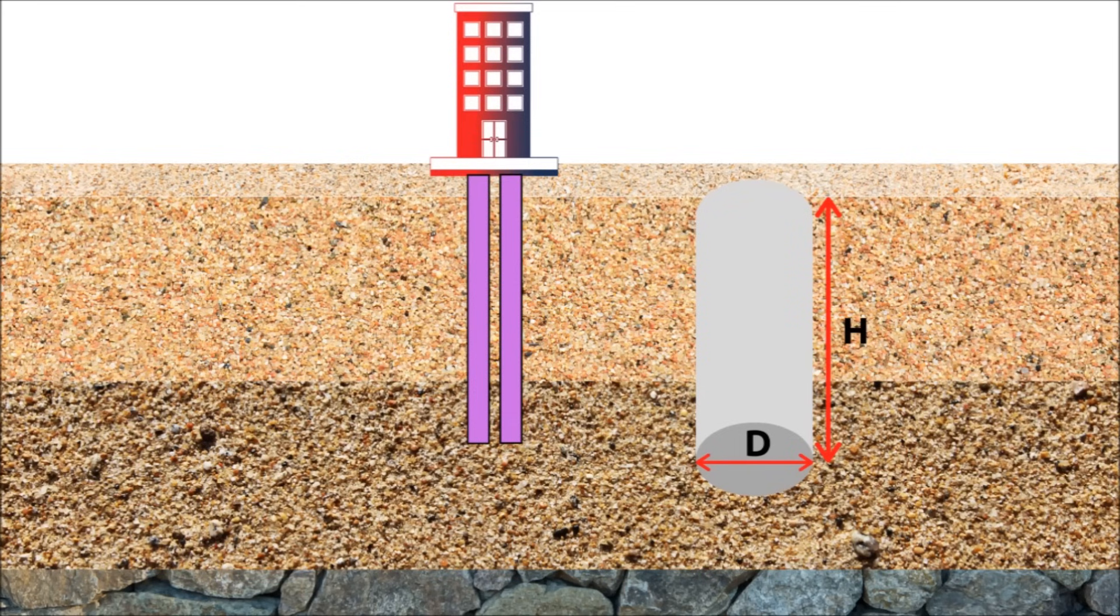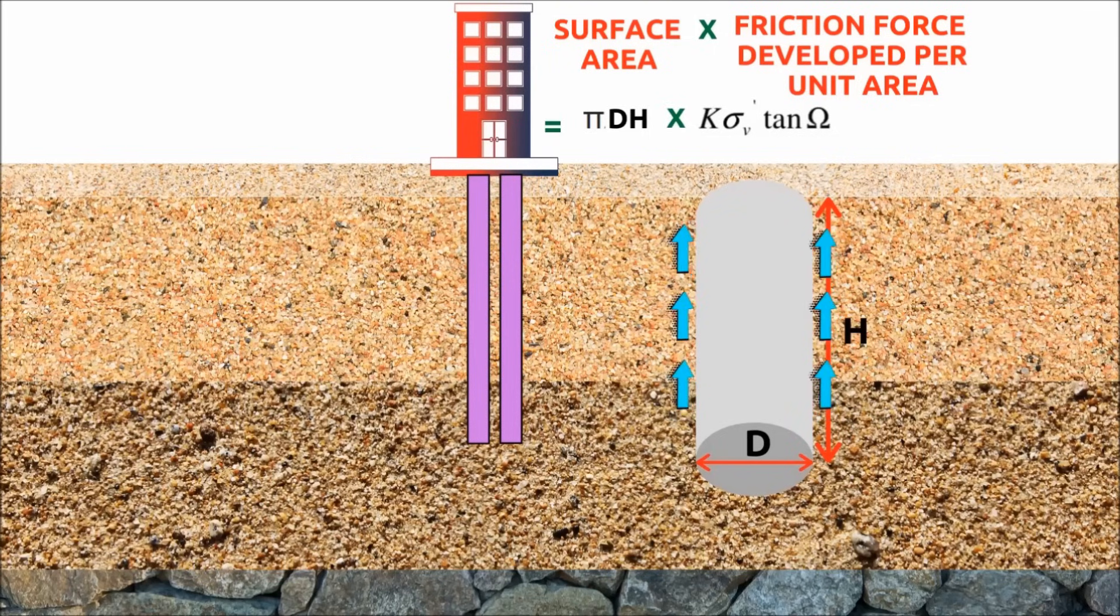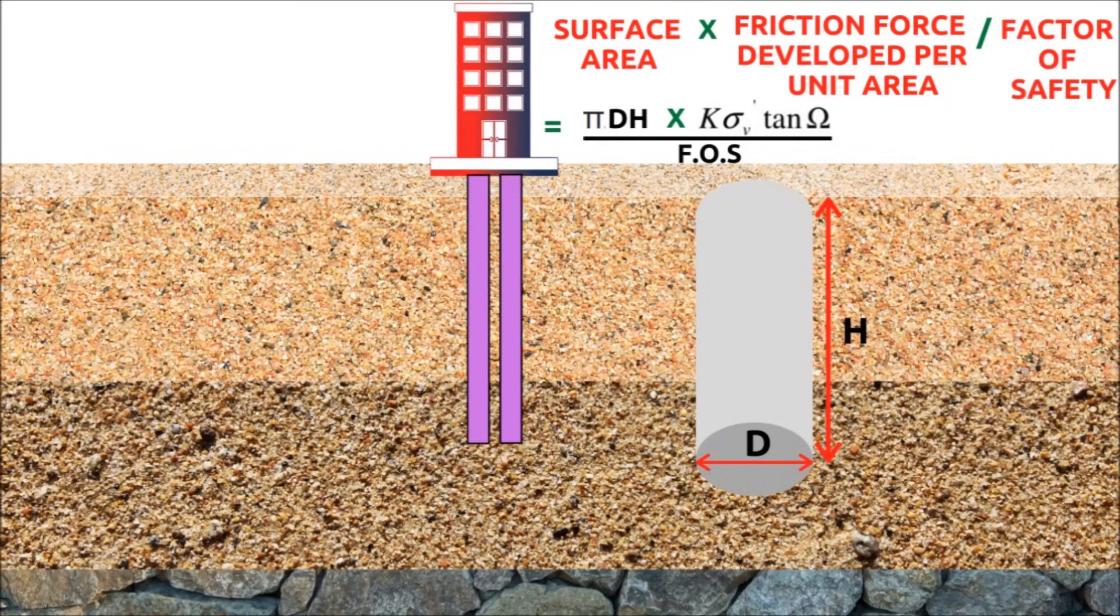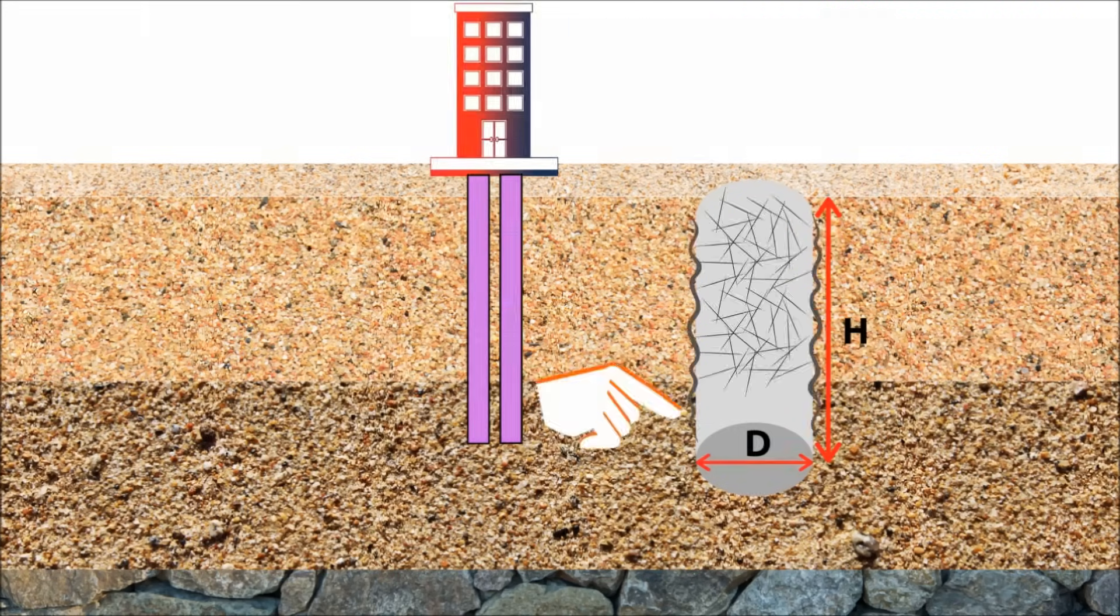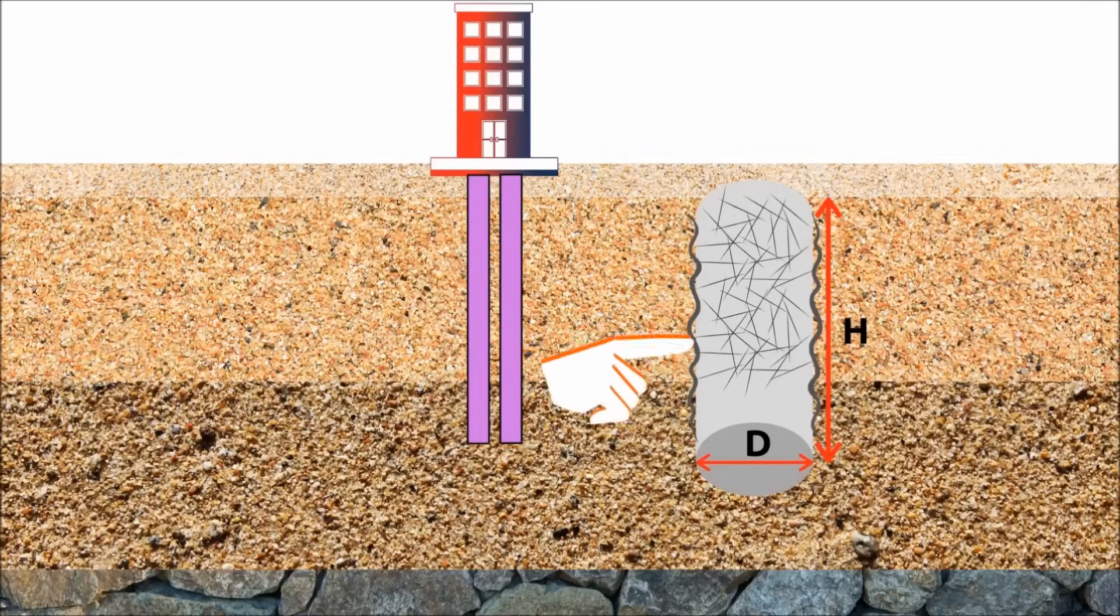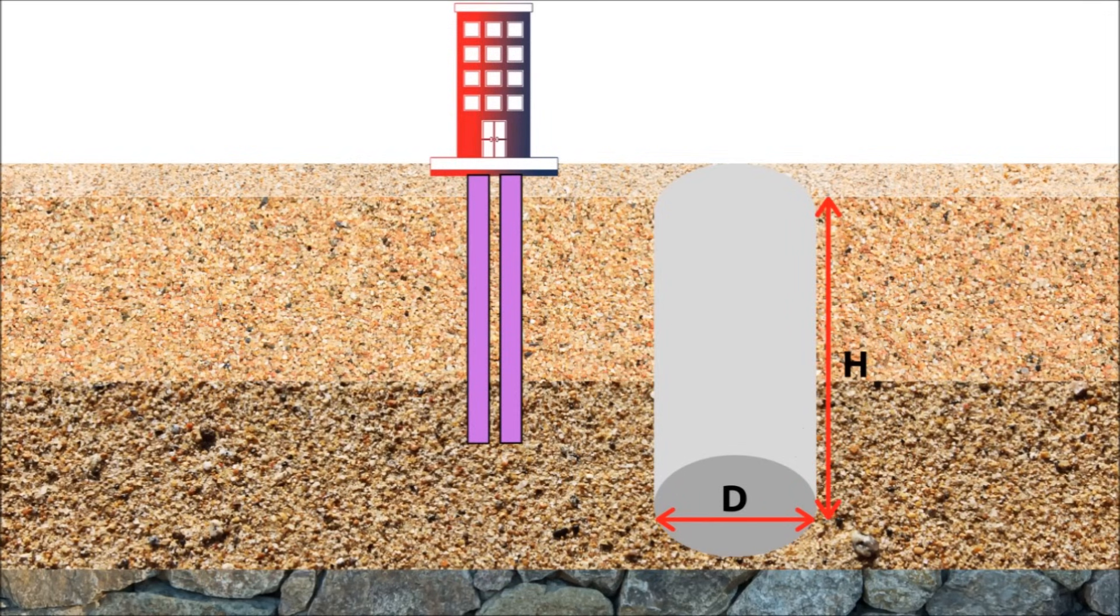The capacity of friction pile can be calculated by multiplying the surface area of the pile and the safe frictional force developed per unit area, with considering a reasonable factor of safety. The total capacity of friction pile can increase by increasing the roughness of the pile surface, the pile diameter, depth, and number of piles.